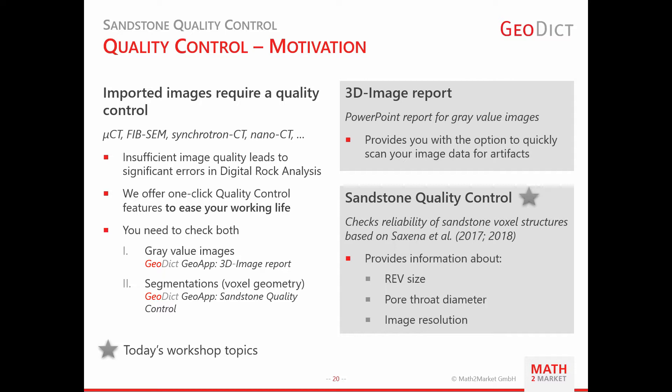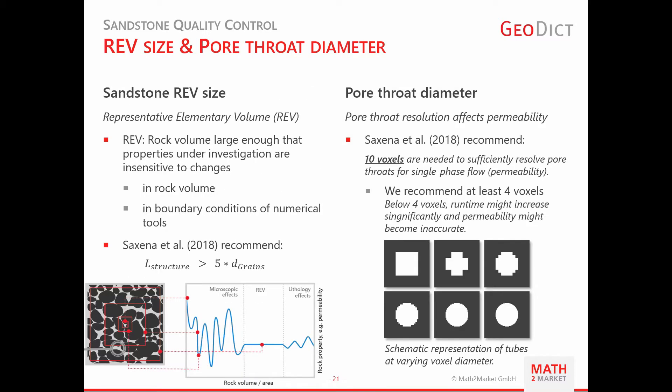The sandstone quality control checks the availability of a representative elementary volume, or REV, the pore-throat diameter, and the image resolution. The REV is defined as a rock volume large enough that properties under investigation are insensitive to changes in rock volume and to changes in boundary conditions of numerical tools.